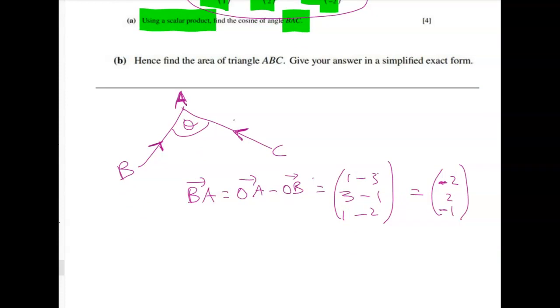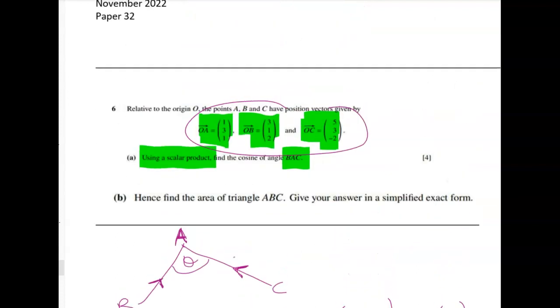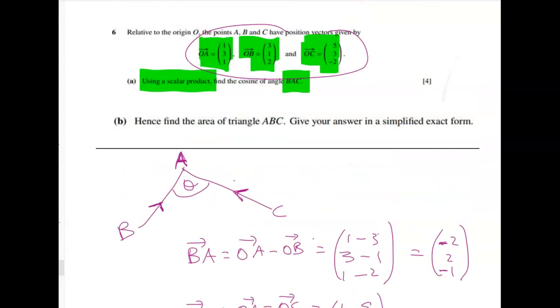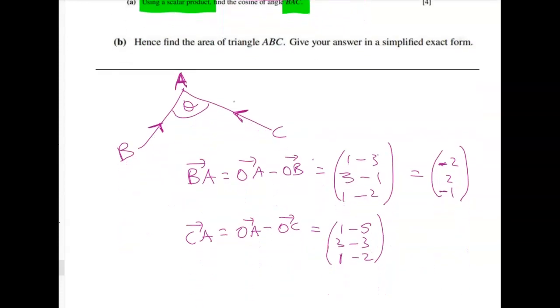Next up we've got CA, which is OA minus OC, and that gives me 1 minus 5, 3 minus 3, and negative 1 minus 2. Now I'm just going to check that I've got that right. So OA was 1, 3, 1. And then OC was 5, 3, negative 2. So that needs to be a plus. What does that give me? Well, I get negative 4, 0, and positive 3.